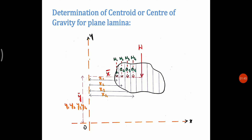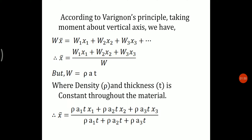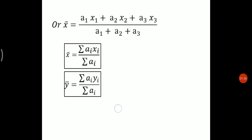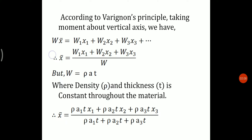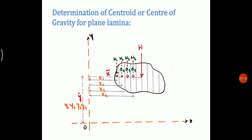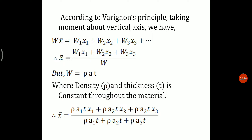We know that the total weight will be equal to w1 plus w2 plus w3, etc. According to Varignon's principle, the total moment due to w into x-bar is equal to the sum of moments of individual forces — that is w1, w2, w3, etc. Therefore, we can write that w·x̄ = w1·x1 + w2·x2 + w3·x3 and so on. Simplifying, x-bar equals w1·x1 + w2·x2 + w3·x3 divided by w.